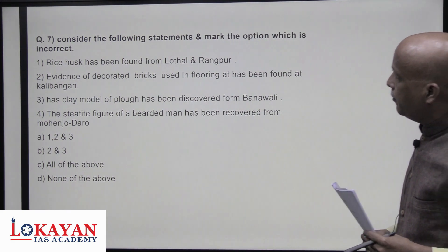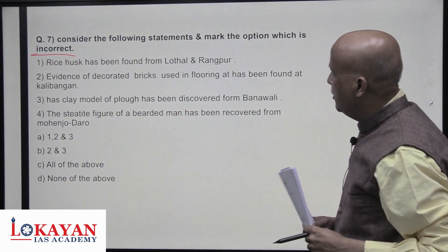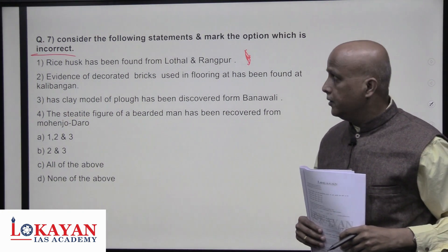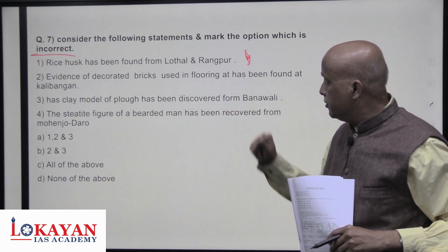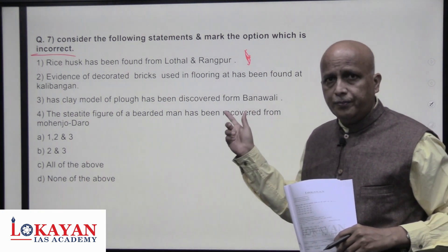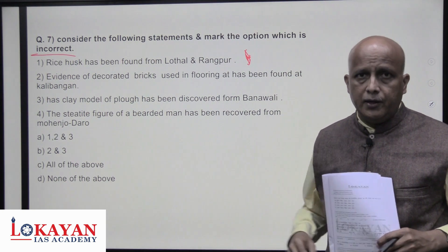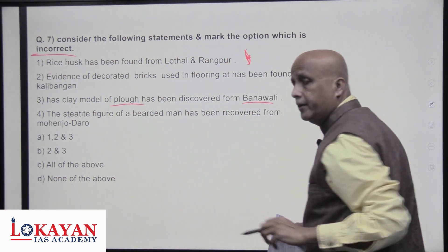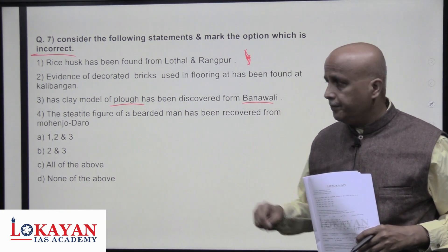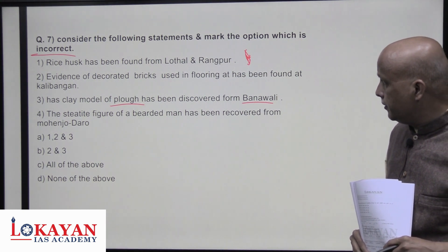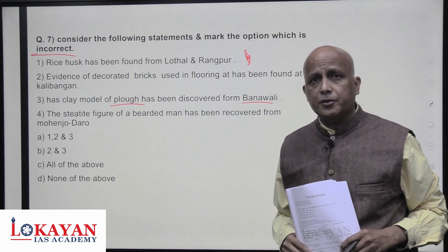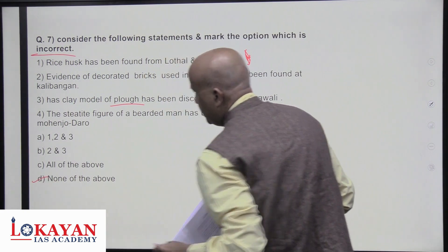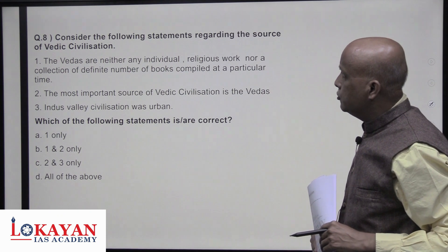Which of the following is incorrect regarding IVC? Rice husk (charred rice) has been found in Rangpur. Evidence of decorated bricks for flooring has been found at Kalibangan. A clay model of a plow was discovered from Banawali in Haryana. A steatite figure of a bearded man — possibly a priest or ruler — was recovered from Mohenjo-daro. All are correct observations, so none of the above is incorrect — answer D.